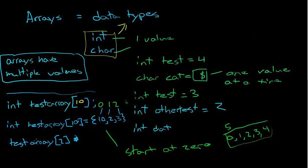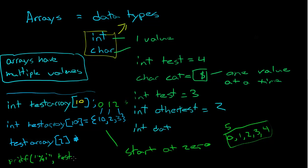So if I printed this — printf("%i", test_array[2]) — then it would print three.